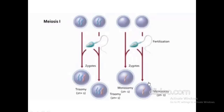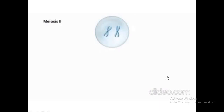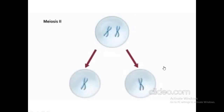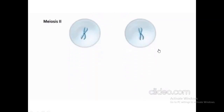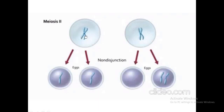In Meiosis II, this shows the normal condition of separation of the two chromosomes. However, when the cell undergoes division to produce cells with a single copy of chromosome and the separation is not proper, after Meiosis II one cell will lack the chromosome entirely.